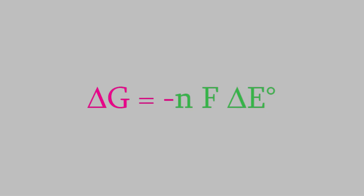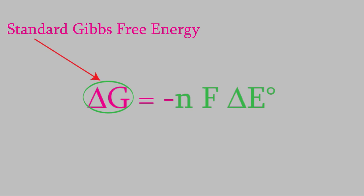As we've seen in previous videos, delta G° is the standard Gibbs free energy. That's the Gibbs free energy at standard temperature and pressure. Delta E is the voltage produced by the voltaic cell.